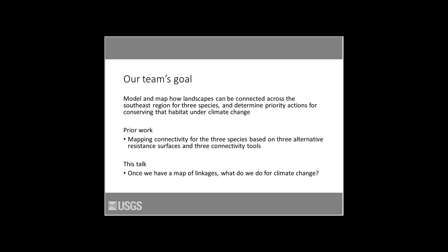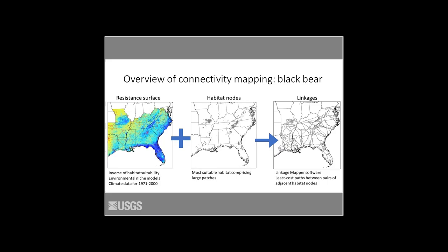The broader goal of our team was to model and map how landscapes can be connected across the region for those three species. We then sought to look at the priority conservation actions for conserving those linkages under climate change. Our prior work focused quite a bit on the technical aspects of how to map connectivity, using a number of different tools and input data. But for this talk, I'm going to focus on what, once we have those maps of linkages, we do with them for climate change.